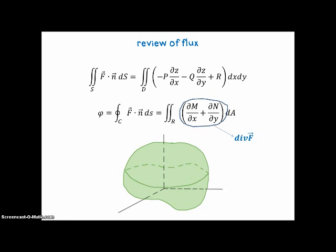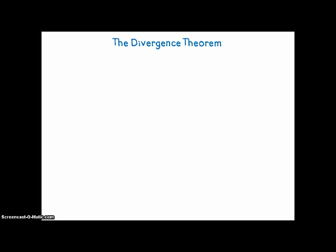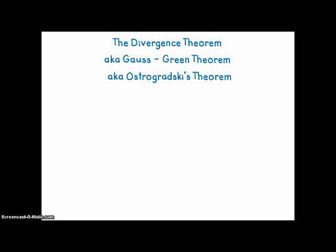Notice that the integrand in this double integral for flux is the divergence of F in two dimensions. So it kind of makes sense that when we move to three dimensions, we'll have a similar integral. The Divergence Theorem, a.k.a. the Gauss-Green theorem. Did you guess that the German dude was Gauss? A.k.a. Ostrogradsky's theorem — that's the Russian dude.